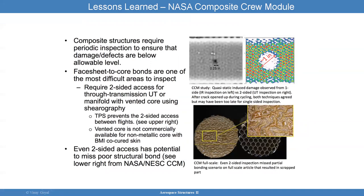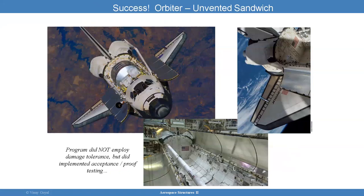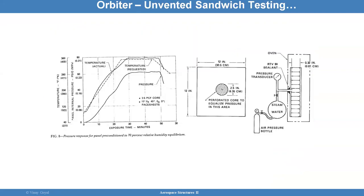This issue has been looked at in the NASA Composite Crew Module program, with a lot of investigations going on to come up with robust designs incorporating periodic inspections, NDI, and analysis and testing to understand the limits of the design when you have a core that can get pressurized. The orbiter also had an unvented sandwich structure, but they did a lot of work to understand proof testing, acceptance testing, and inspections.